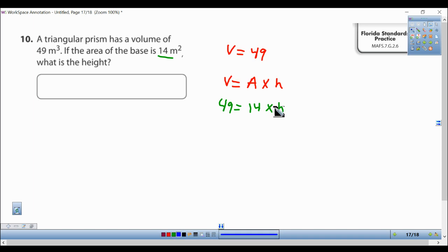So in order to get height by itself, I have to do the opposite of what I'm doing here. I'm multiplying, so I'll divide on this side. Divide both sides by 14.